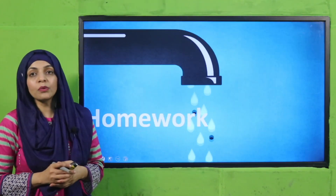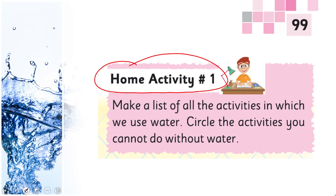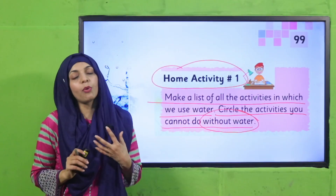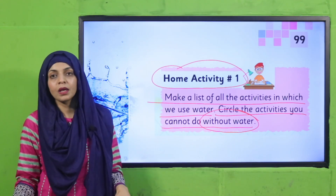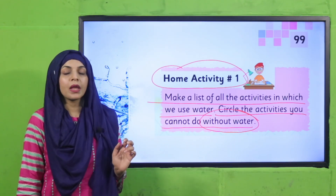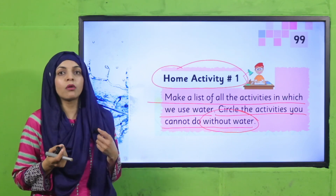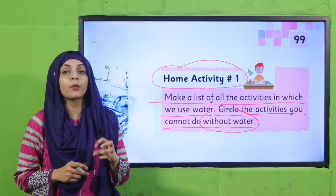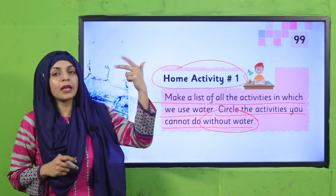Now, quickly note down your homework. Go back to page number 99 where home activity number 1 is given. Make a list of all the activities in which we use water, then circle the activities you cannot do without water. For example, if you need to wash the car, you can also clean it with a cloth, so water is not always necessary. Circle those activities where water is definitely required — like drinking, brushing teeth, and bathing.